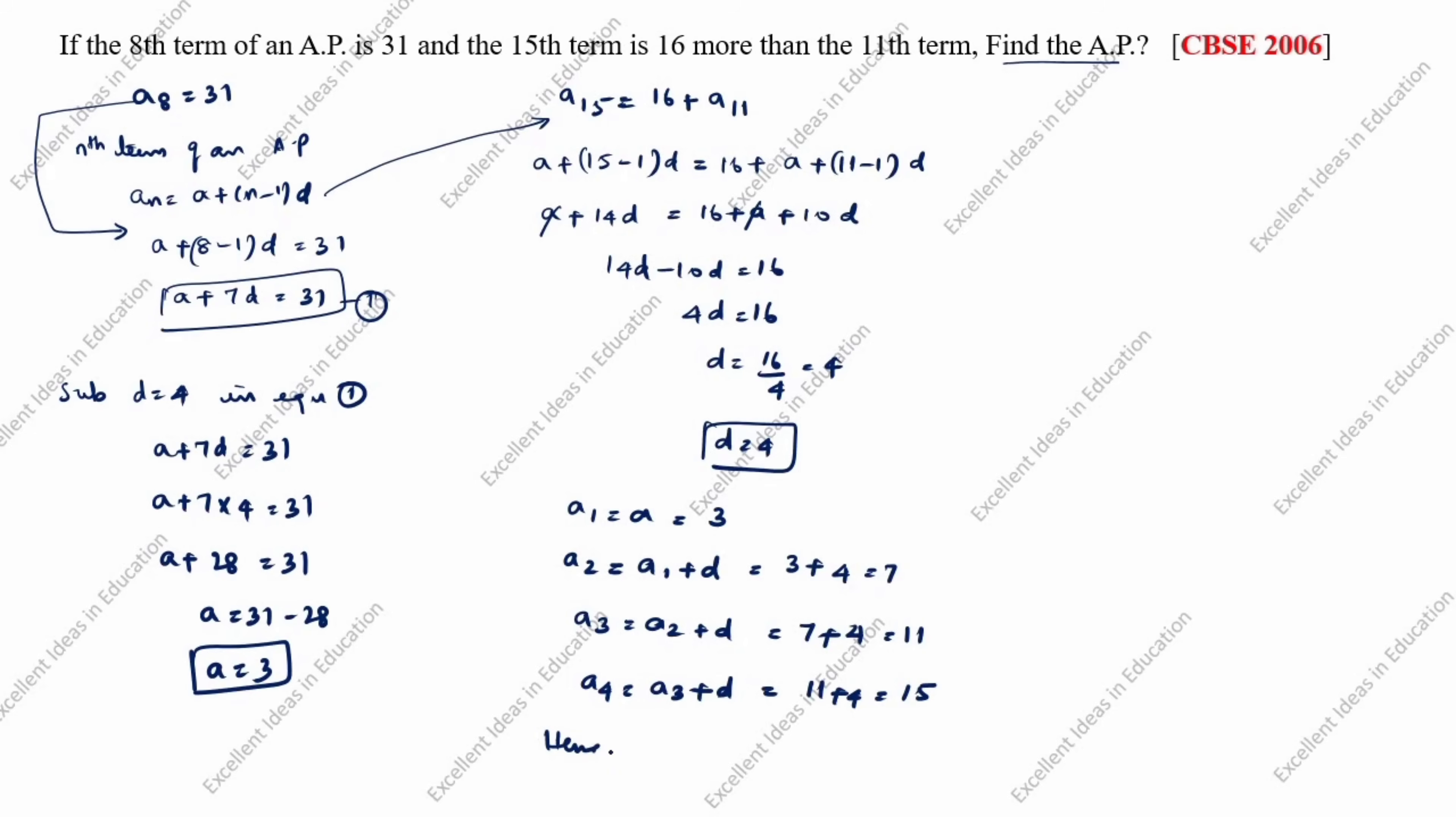Hence, the AP is 3 comma 7 comma 11 comma 15, and this goes on. This is the answer. Thanks for watching this video.